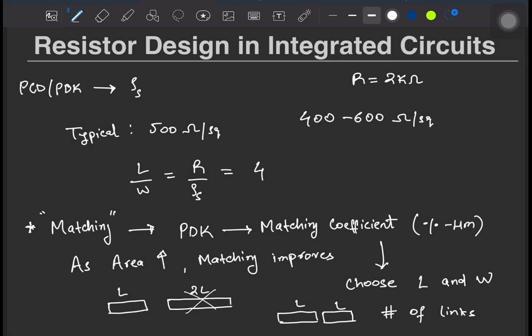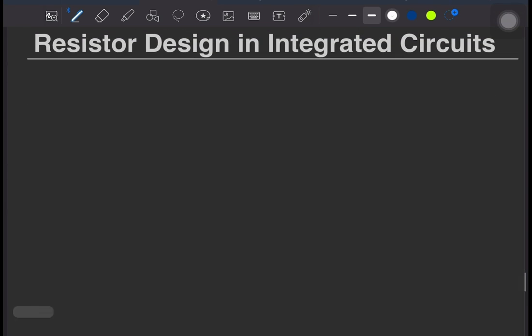Another tip is to be careful while using minimum W resistors as they can experience resistance variation and mismatch issues. Great, so we discussed the sheet resistance and the matching coefficient.